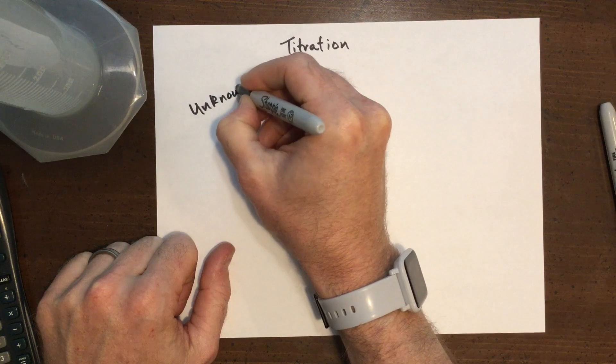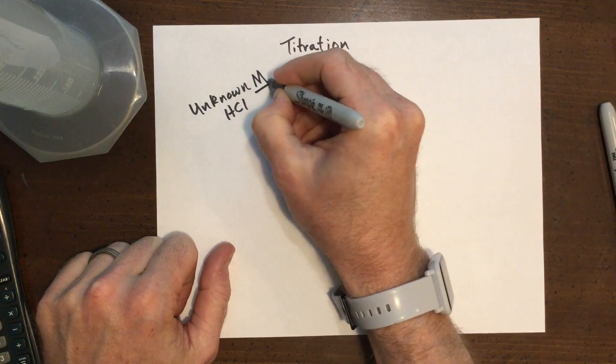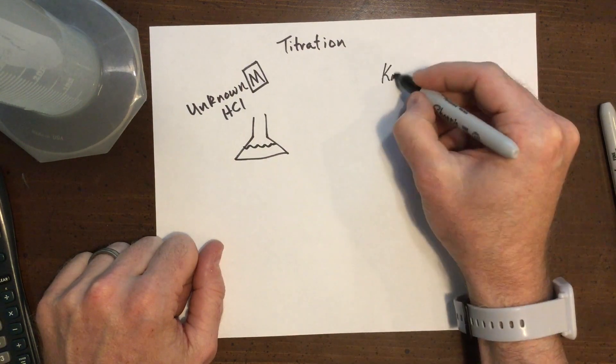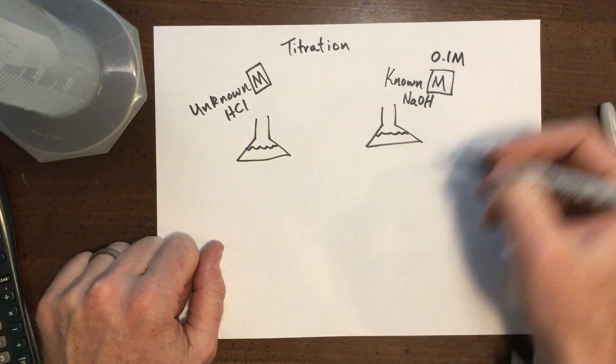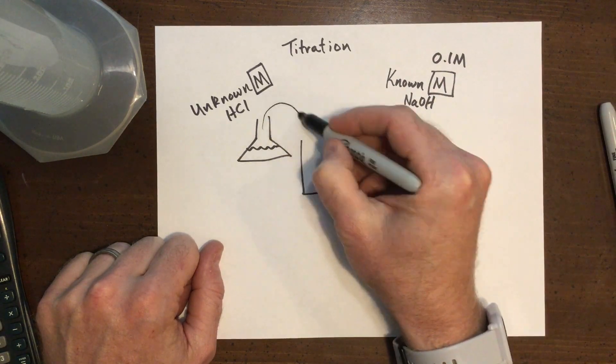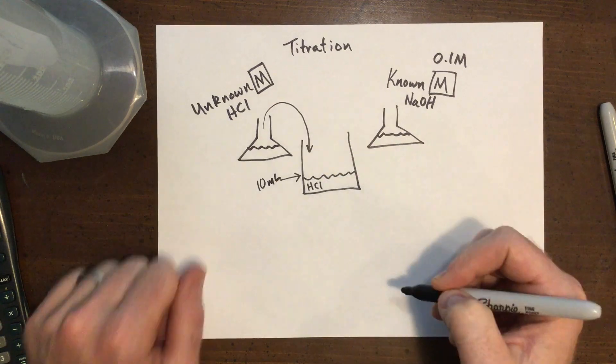Now, in the titration we do, we will have some hydrochloric acid with unknown molarity, and we will have some sodium hydroxide that we know the molarity of. Next, we'll take a set amount of our unknown HCl and place it into a beaker. We'll use 10 milliliters.